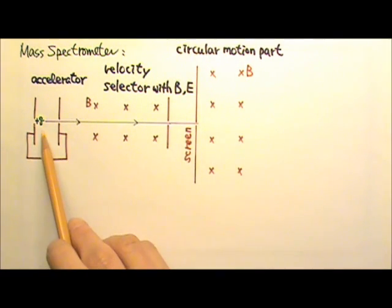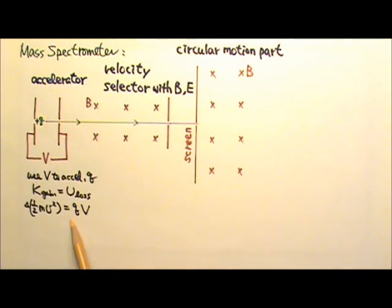Suppose we are looking at a positive q. First we apply a voltage to accelerate the charge. For this part we can use conservation of energy. The kinetic energy gain comes from the potential energy loss, which means the increase in 1/2 mv² equals q times V.